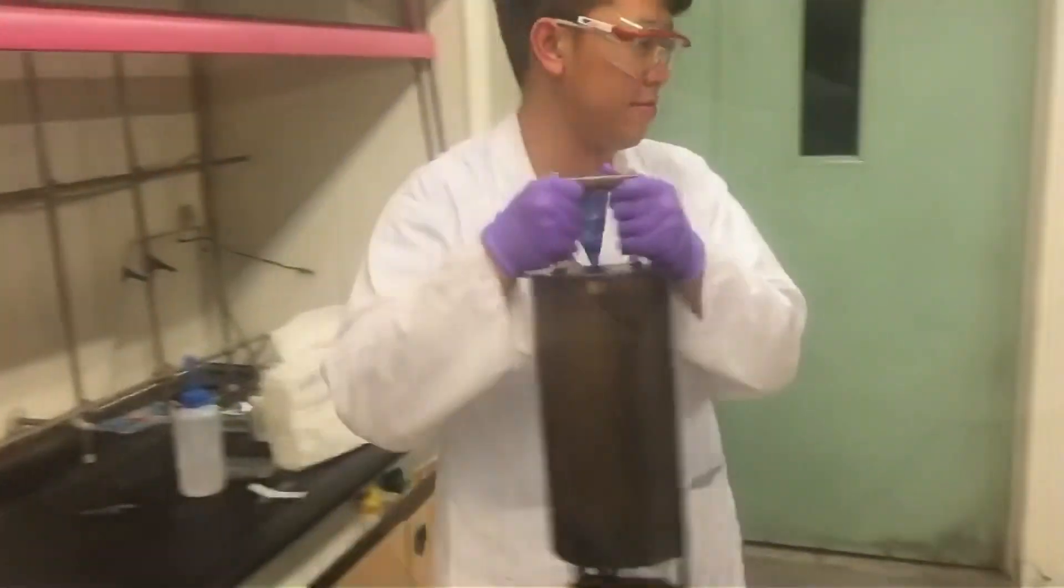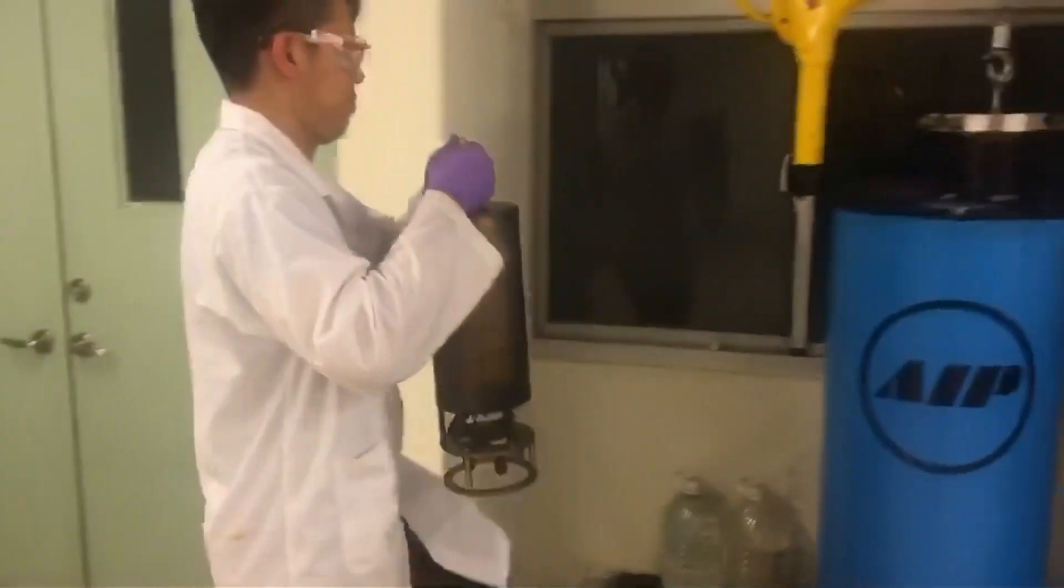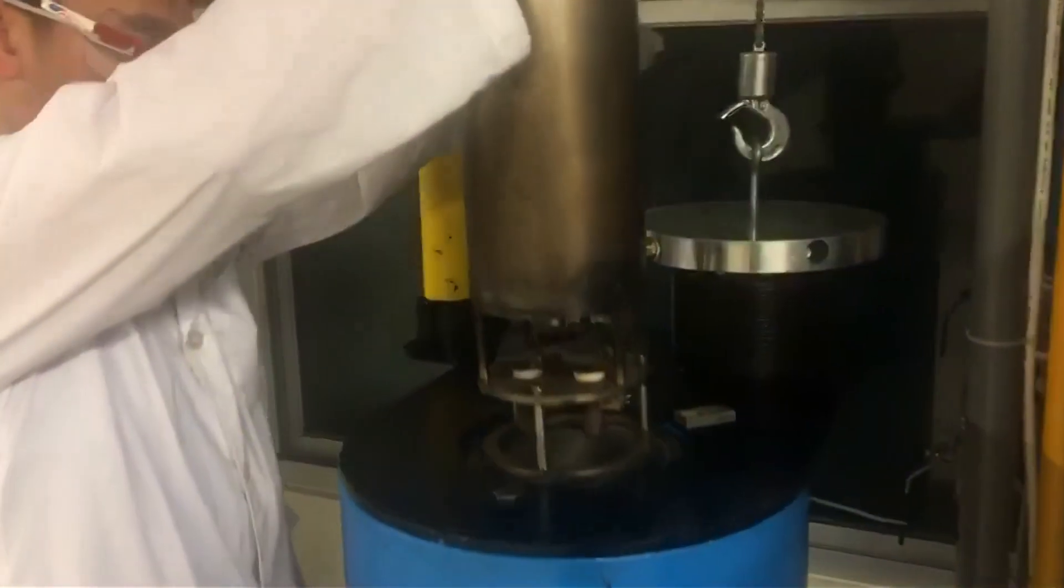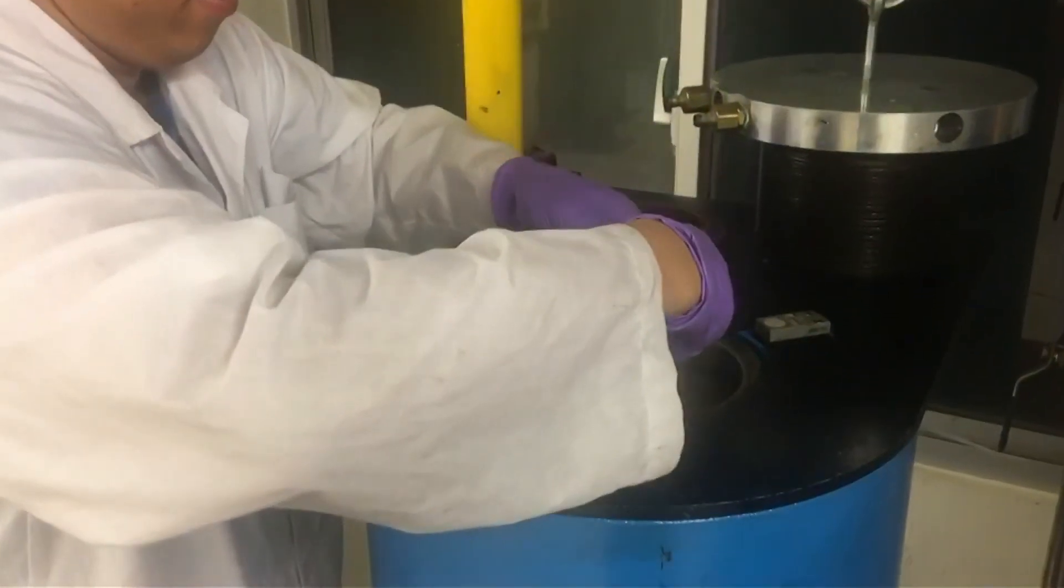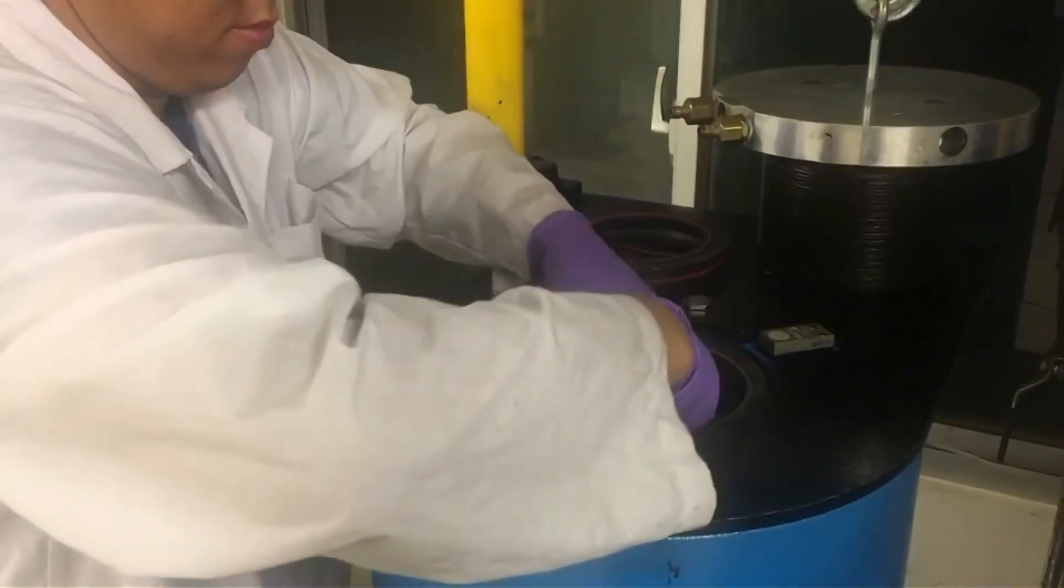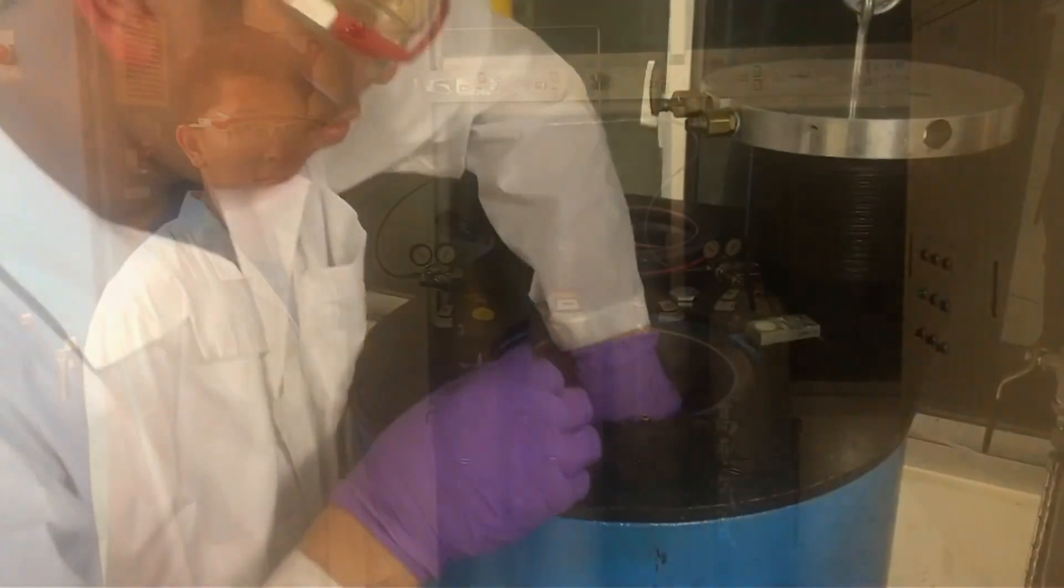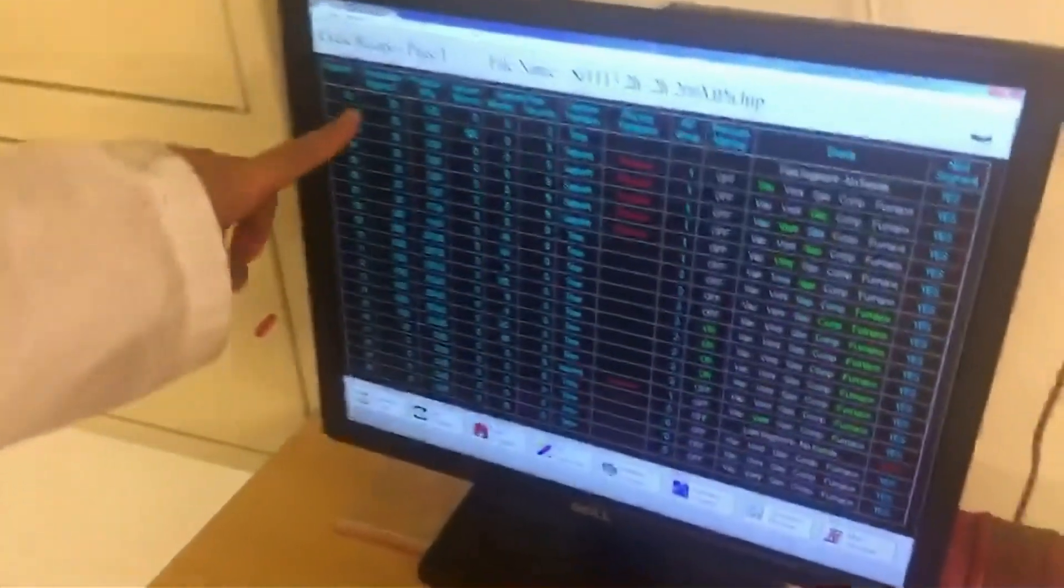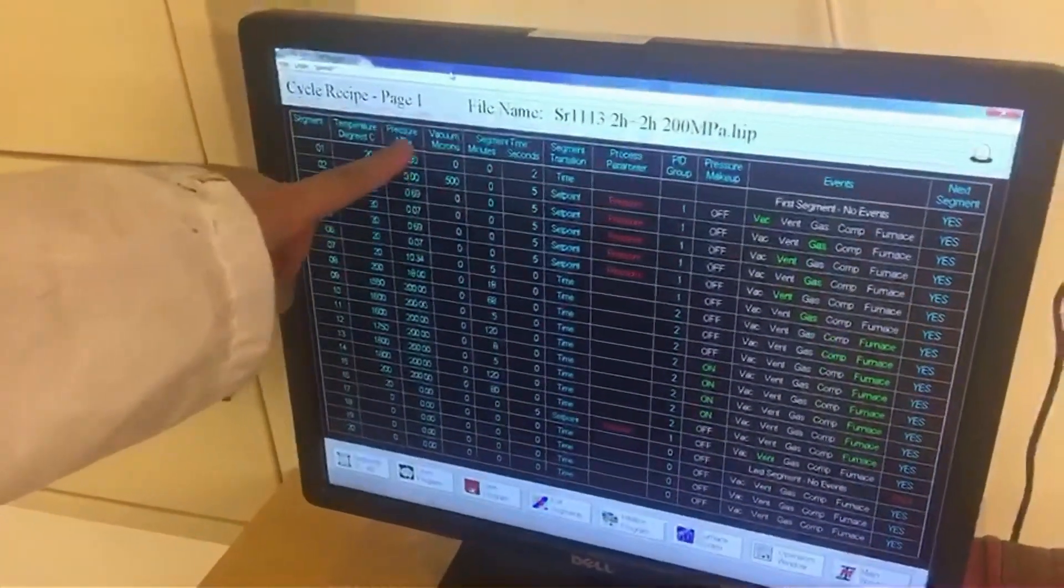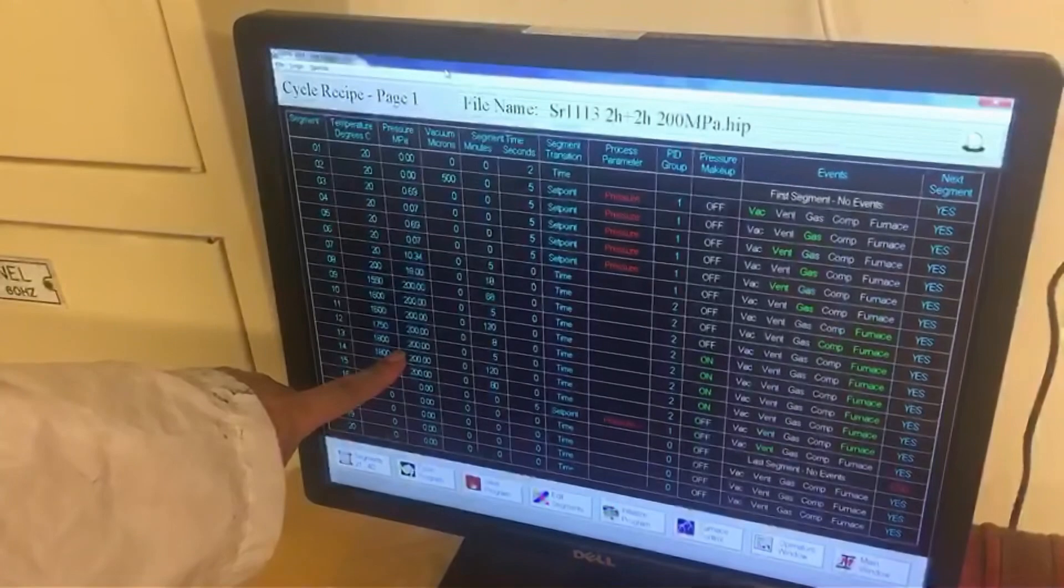Then put the heater back to the HIP furnace. We use the nitrogen gas as the synthesis atmosphere. All of the synthesis programs are set by the computer, including the temperature and the gas pressure.